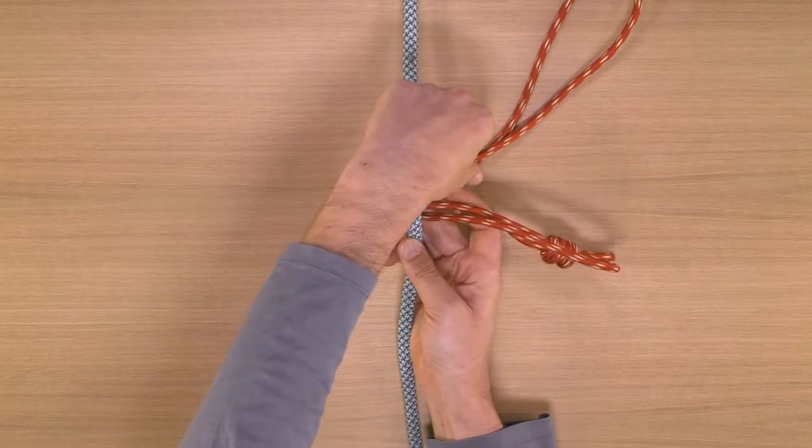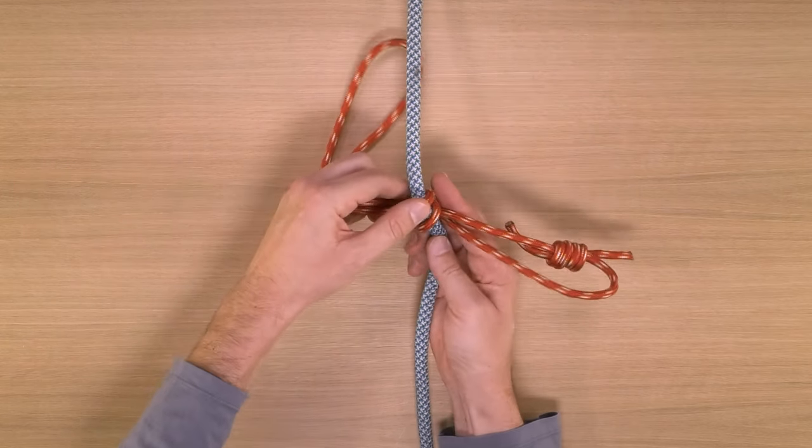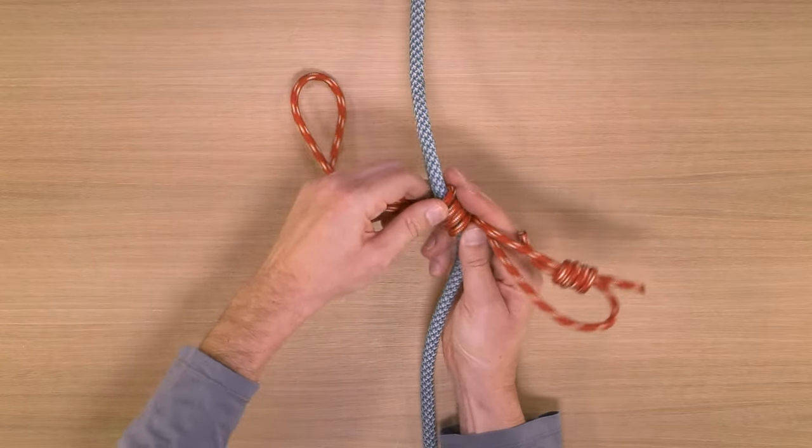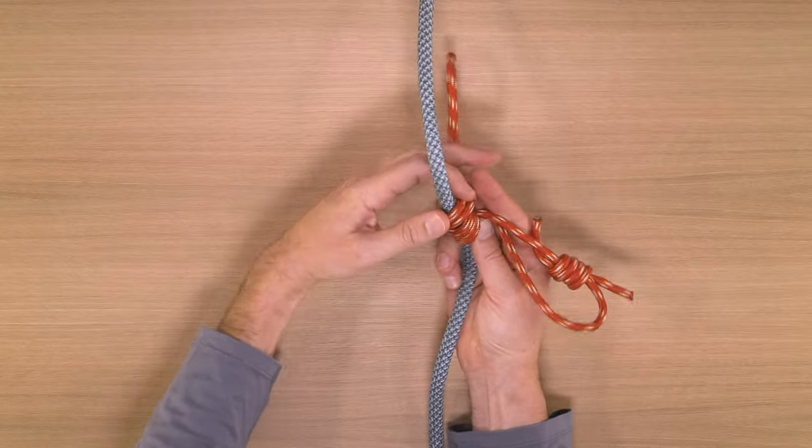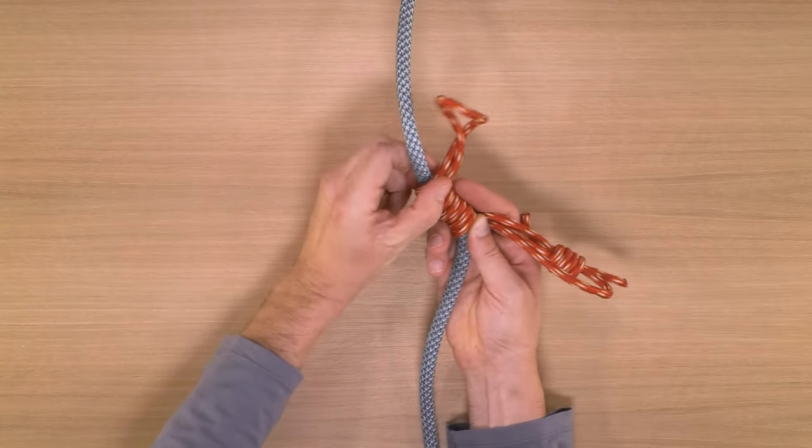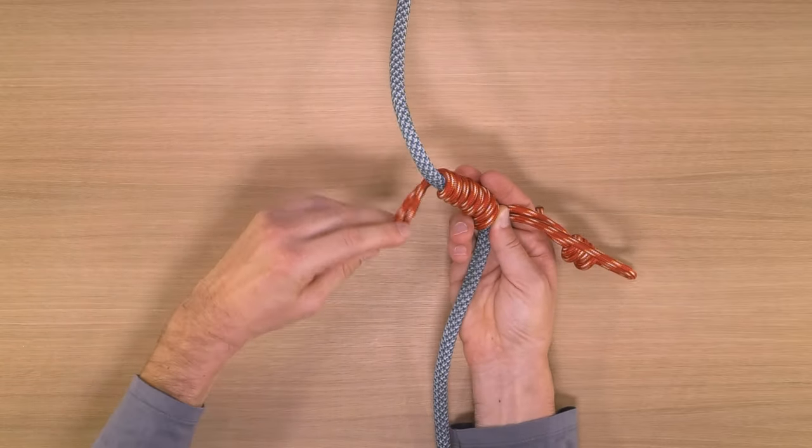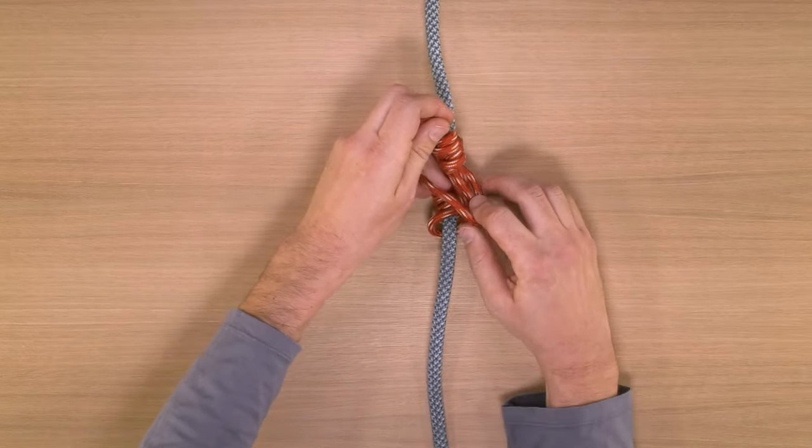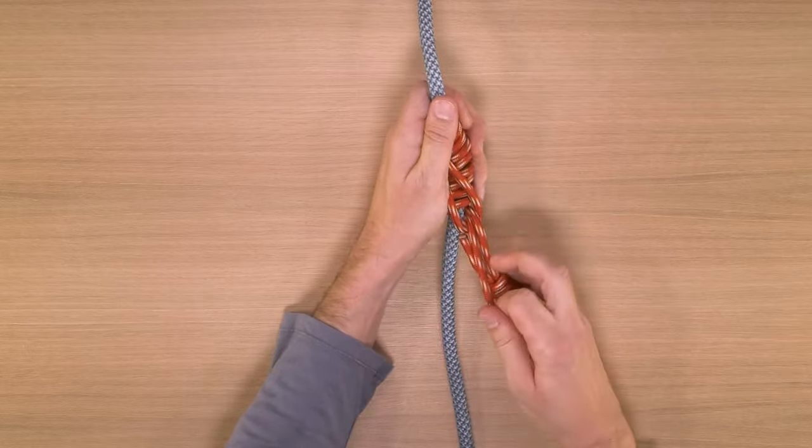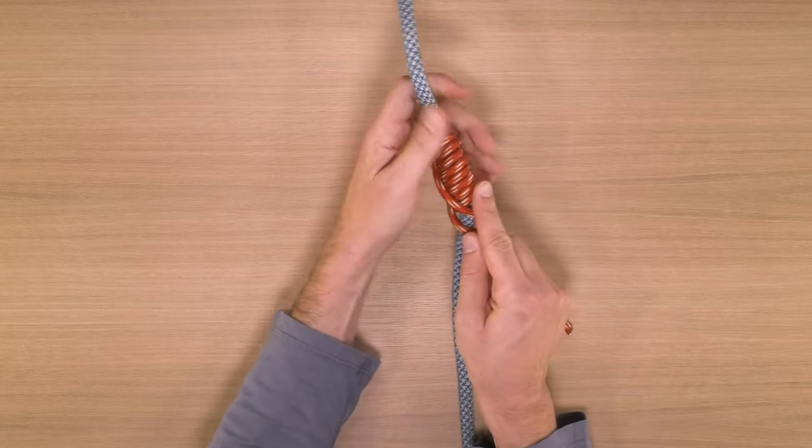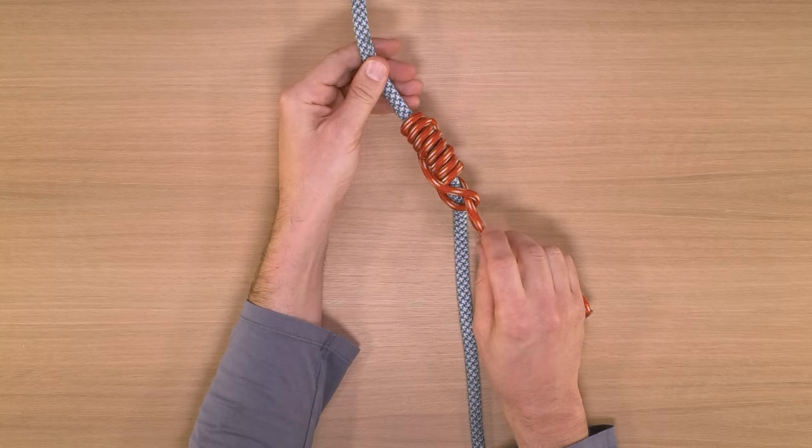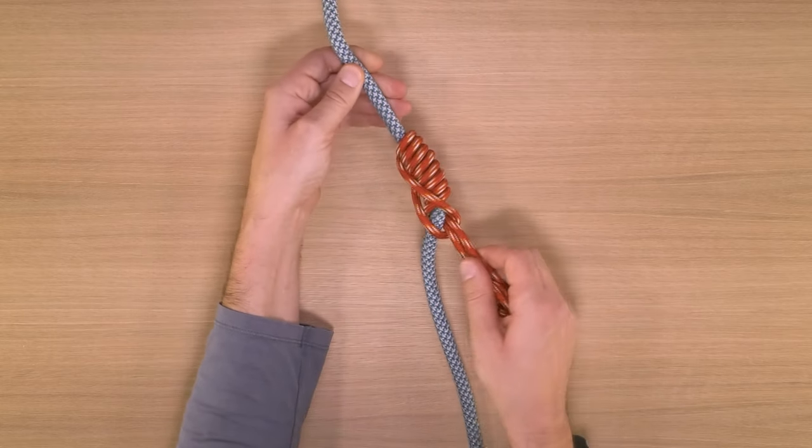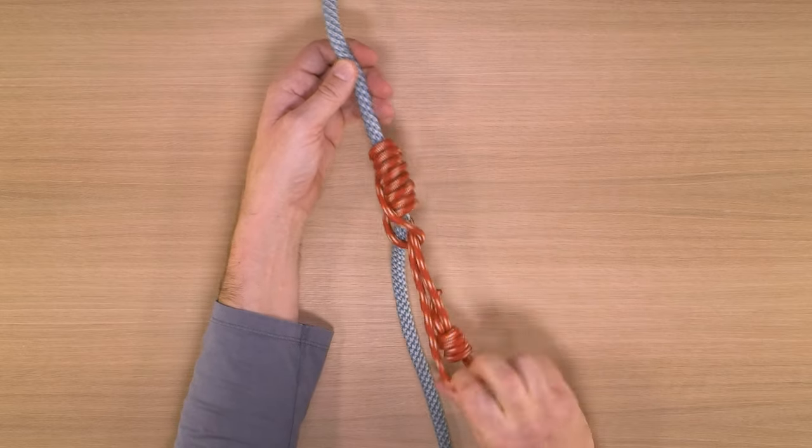To tie a klemheist hitch, wrap your cord in a spiral upward. The number of wraps will depend on the relative diameter of the cord and the rope and how new and slippery they are. Pass the bottom end through the top loop and pull down. The klemheist is a one-direction hitch. It's only good for that downward pull, so make sure you tie it the correct way.